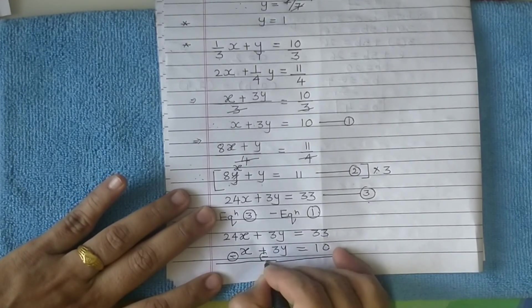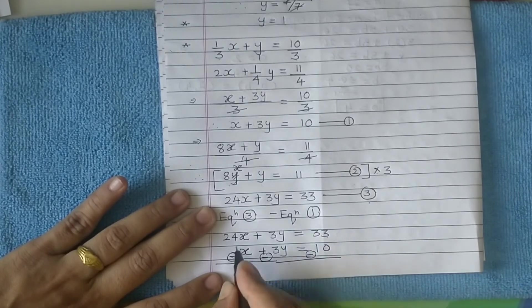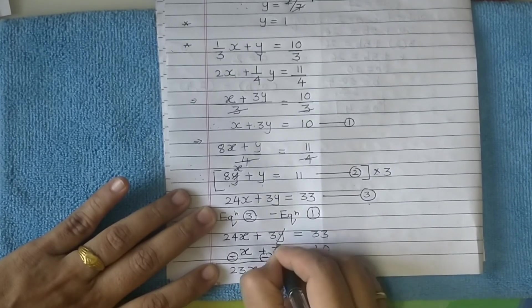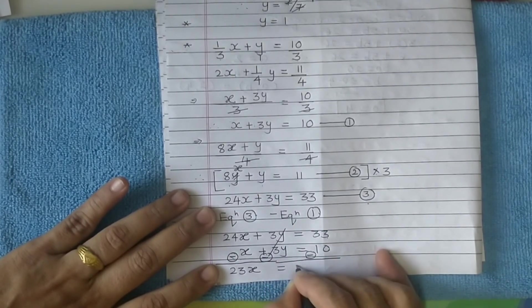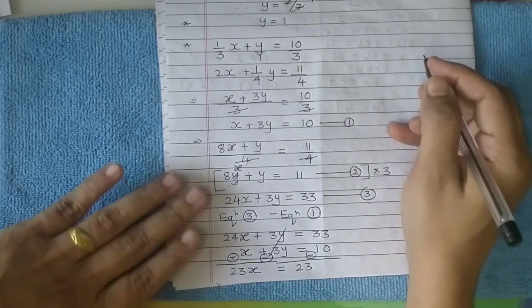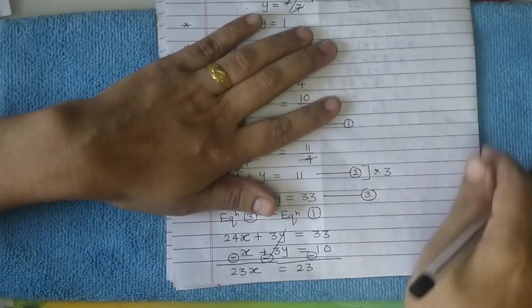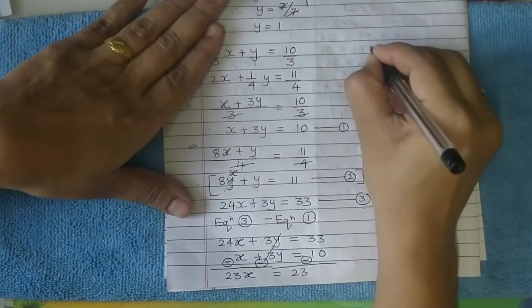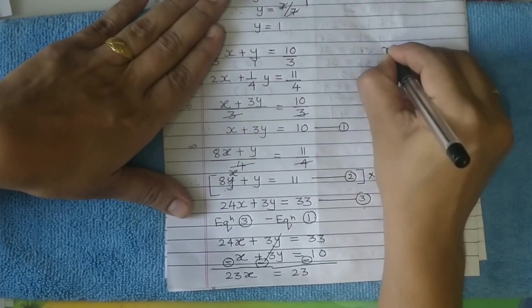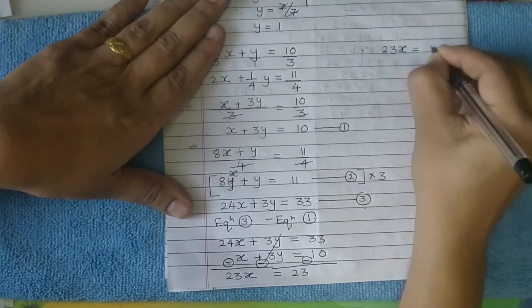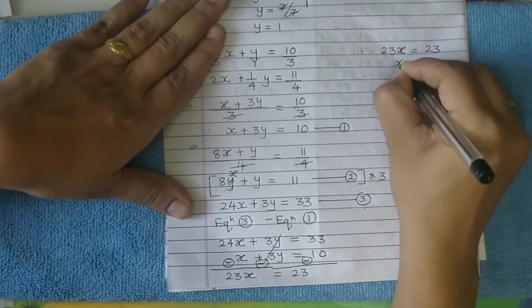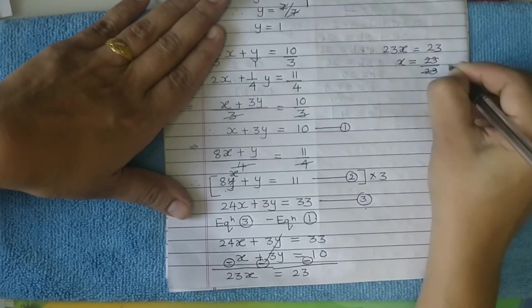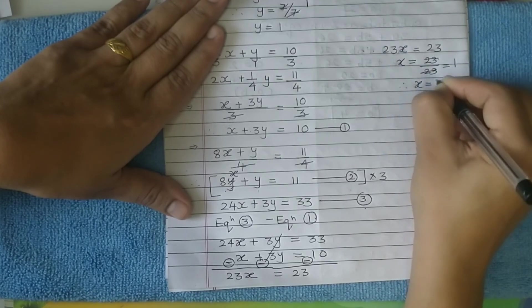24 minus x is 23x, plus minus 3y gets cancelled, equals 23. Therefore 23x equals 23. x equals 23 upon 23, which is 1. So x equals 1.